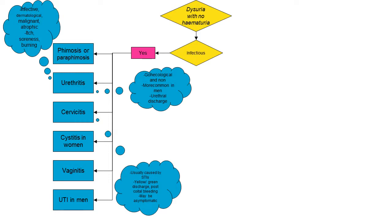We now move on to the patient with dysuria and no haematuria. Is the cause infectious? If yes, this gives a list of diagnoses. Urethritis is an infective condition that causes itchiness, soreness, and burning around the urethra. It's more common in men and you often get some discharge with it. With cervicitis, you also get some discharge and it's usually caused by STIs. You may also get some post-coital bleeding, but it may also be asymptomatic.